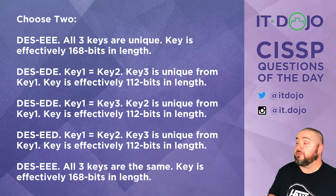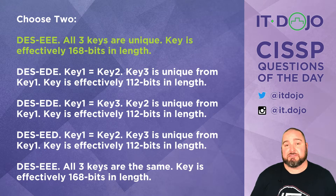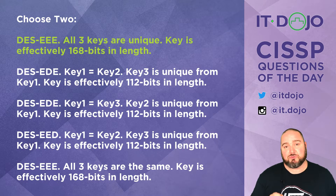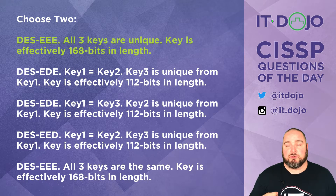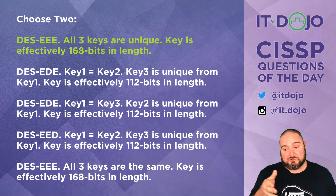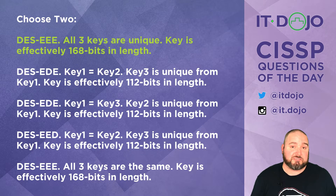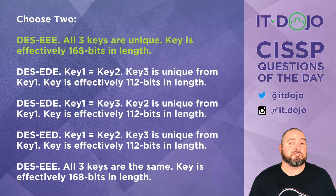The first correct choice is DES-EEE3, which means encryption, encryption, encryption, and all of the keys are unique — meaning you have three separate keys. Key one is used for the first round, key two for the second round, and key three for the third round. When you encrypt data three times each with a different key, you effectively get 56 bits times three, giving you 168-bit encryption.